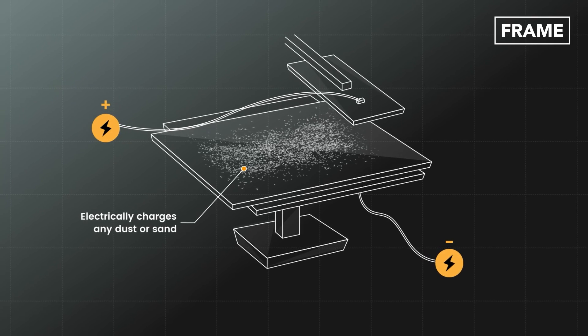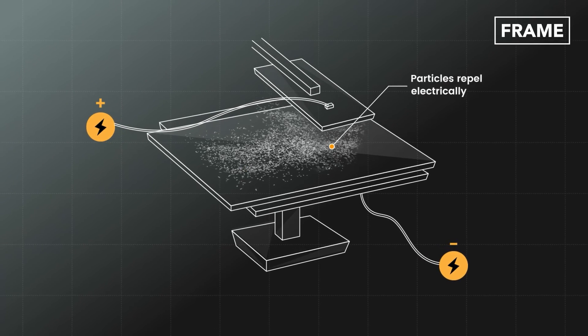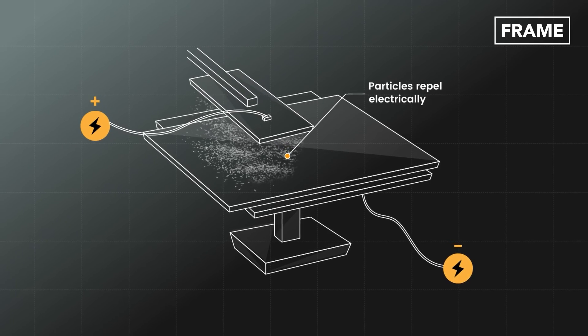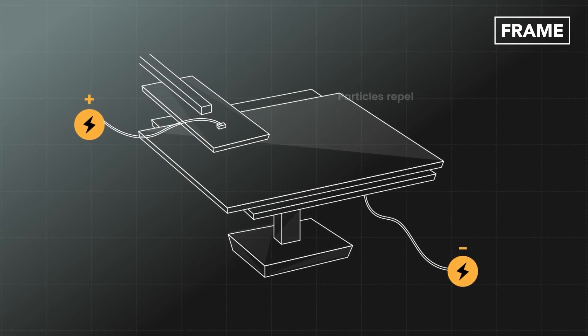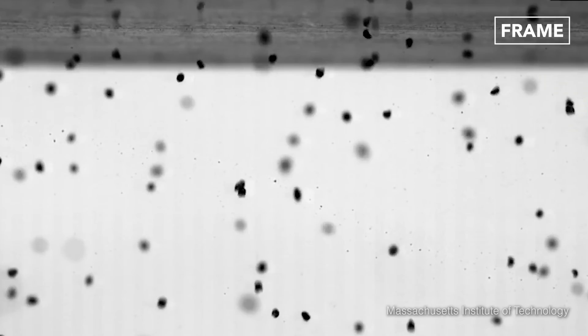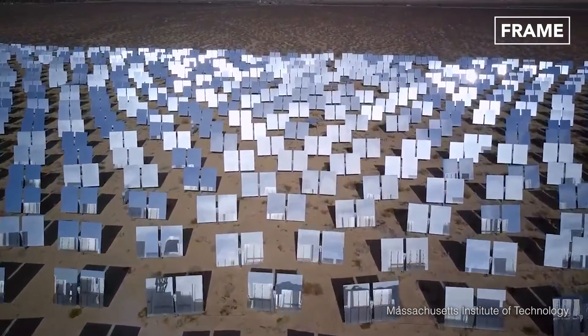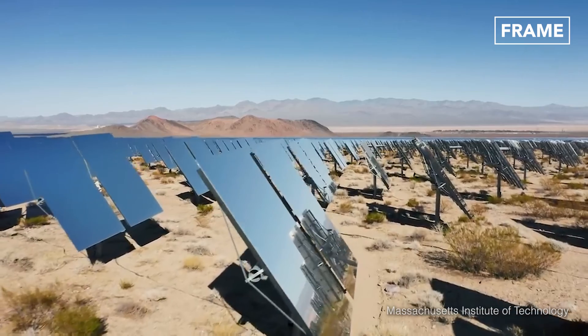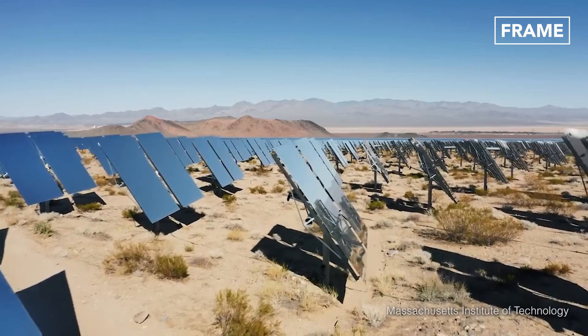Voltage can then be applied to the panel's exterior via a robotic charging device. This causes the sand and dust particles to jump from the panel as they are electrically repelled. The solar equipment is then debris-free and can continue working at full capacity.